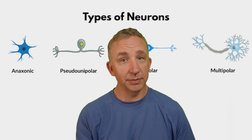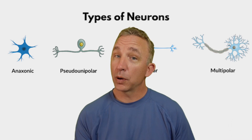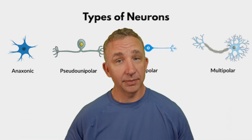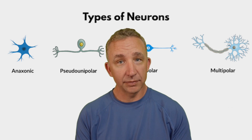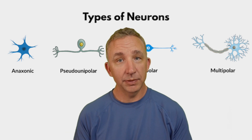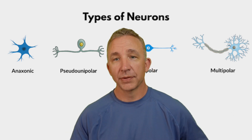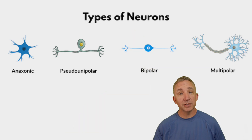Remember, our central nervous system is the brain and spinal cord. Our peripheral nervous system, as we go to the outside of the body, includes the nerves and receptors that help communicate to the central nervous system. So let's talk about the different types of neurons.